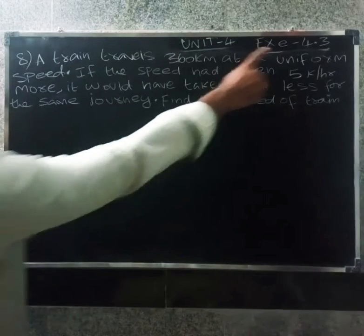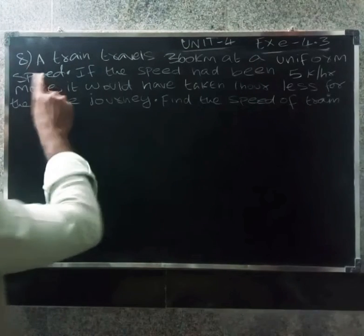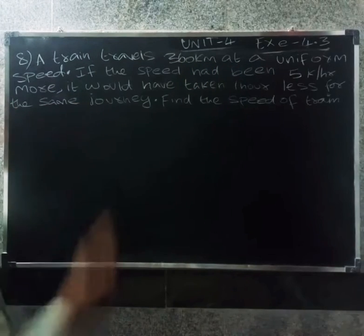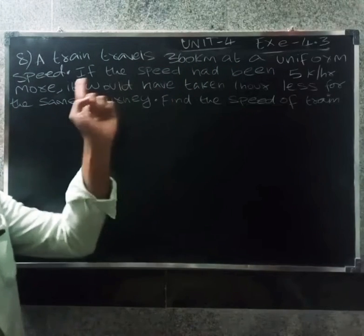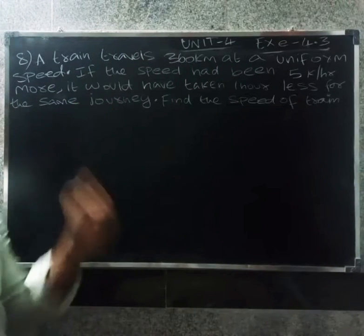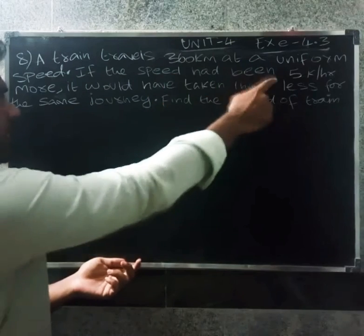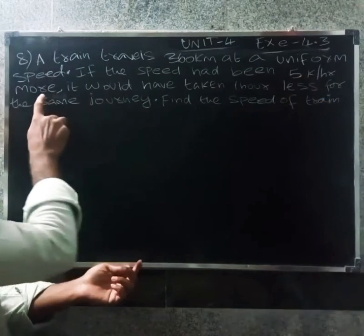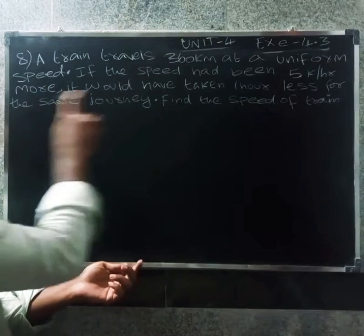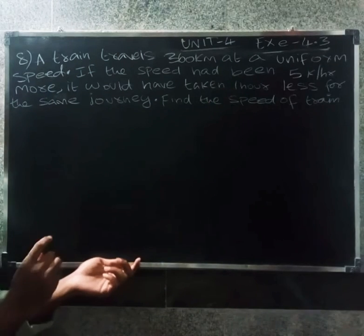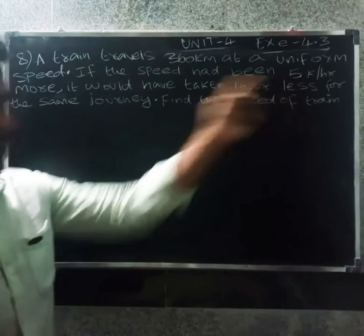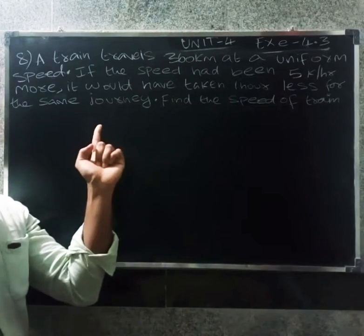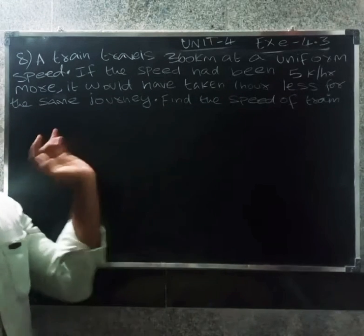Hello friends. In this case, problem 4 point 8. A train travels 360 km at uniform speed. If the speed is 5 km per hour more, it will take 1 hour less for the same journey. Find the speed of the train.